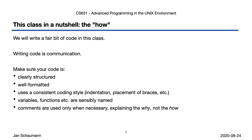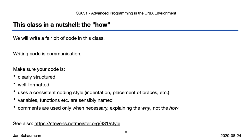Another thing we will be focusing on is providing comments only when they're necessary. A lot of computer science students learn early on that every line of code must be commented, but as you're reading code and comments, you're context switching — switching from the programming language to another language, often English, which may not even be your native language. So we are reducing context switching and optimizing for readability of the code by itself. We focus on comments that explain why you're doing something, not how you're doing it. We have a coding style guide linked at the bottom of this slide.